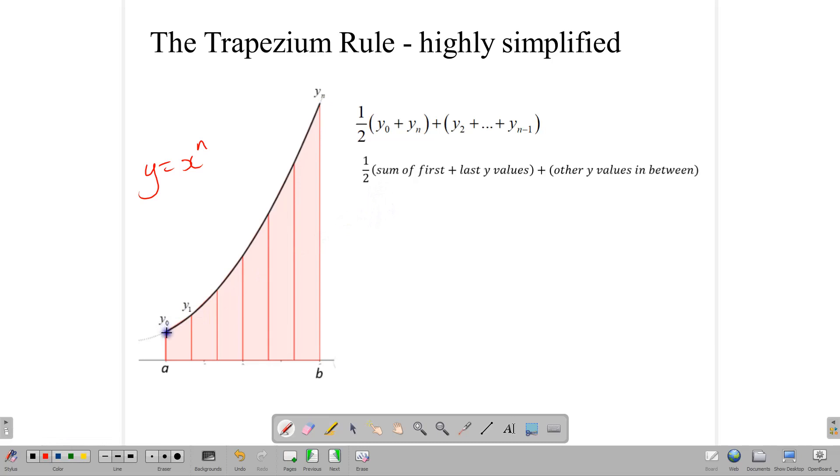This is how we apply the trapezium rule in a highly simplified form. First, we take the first height, the first y value corresponding to the number that we have. We're finding it between a and b. We look at the first y value and then the last y value. We add those two values and find half of it. So half the sum of the first and the last y values. We add them together, find half of it, and then we add all the other y values in between.